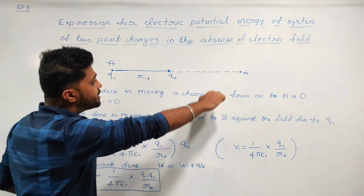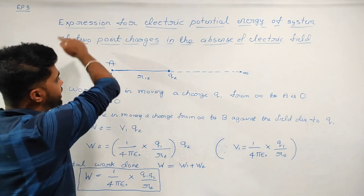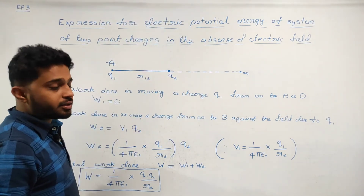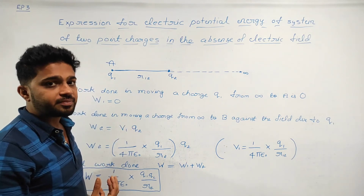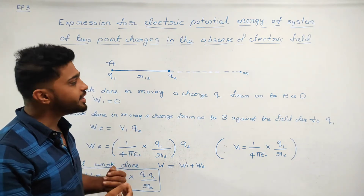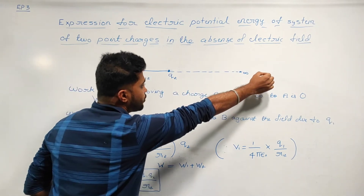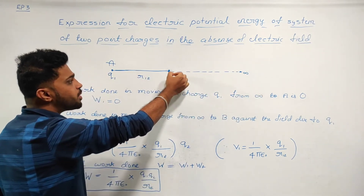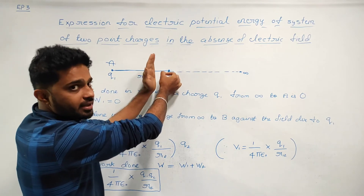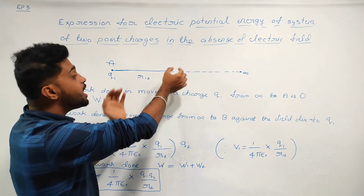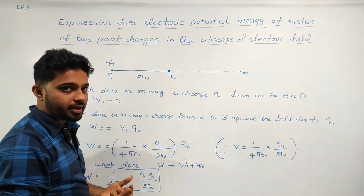The electric field will be created by Q1 charge. If we bring a same kind of charge — a like charge — it will move into the electric field. So the repulsive force will apply on this charge, and the charge will not be able to move freely.